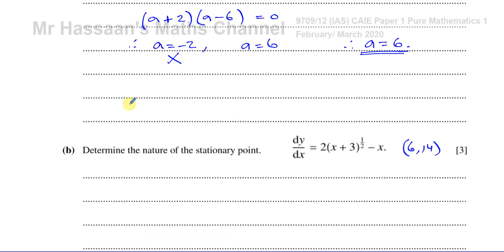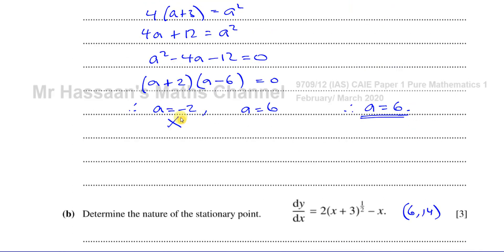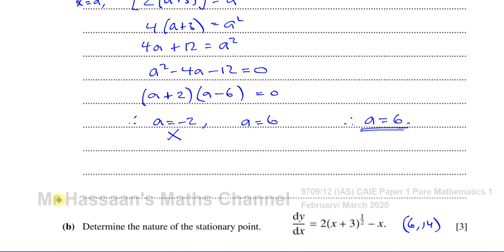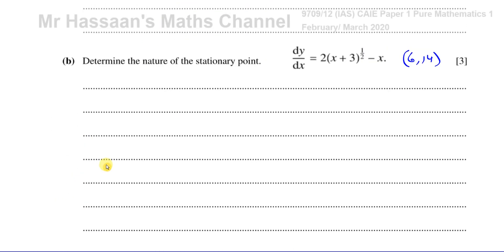Part B says: determine the nature of the stationary point — whether it's a maximum, minimum, or point of inflection. The nature of the stationary point can be found by taking the second differential and substituting the x-value of the stationary point, because the second differential tells you how the gradient is changing — the rate of change of the gradient.